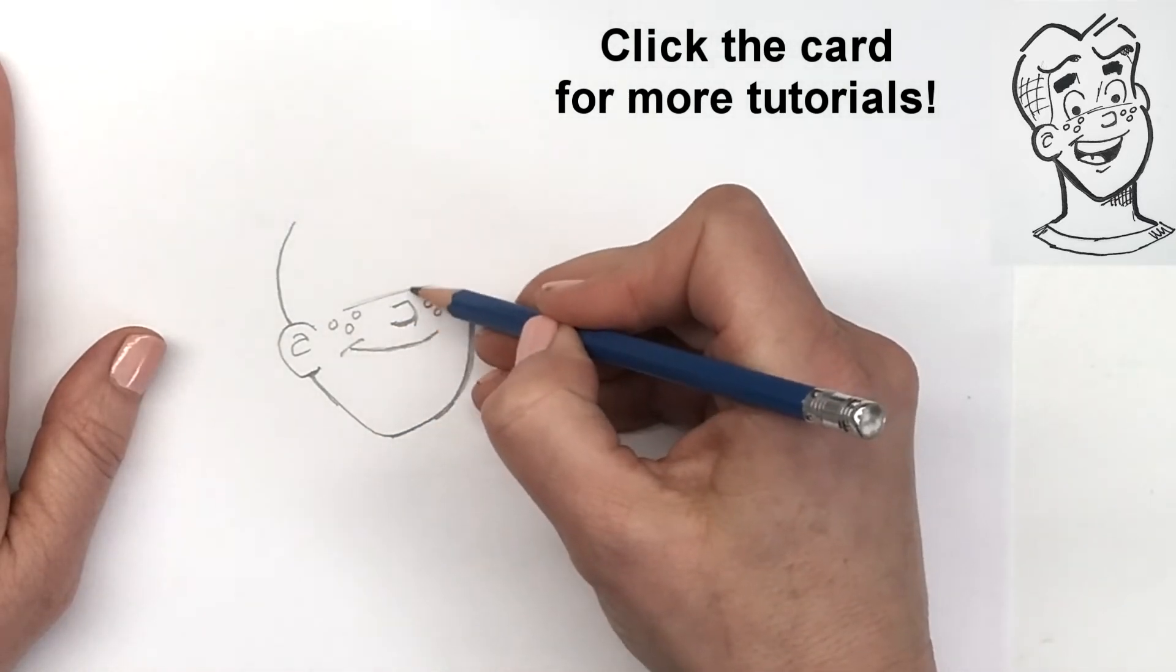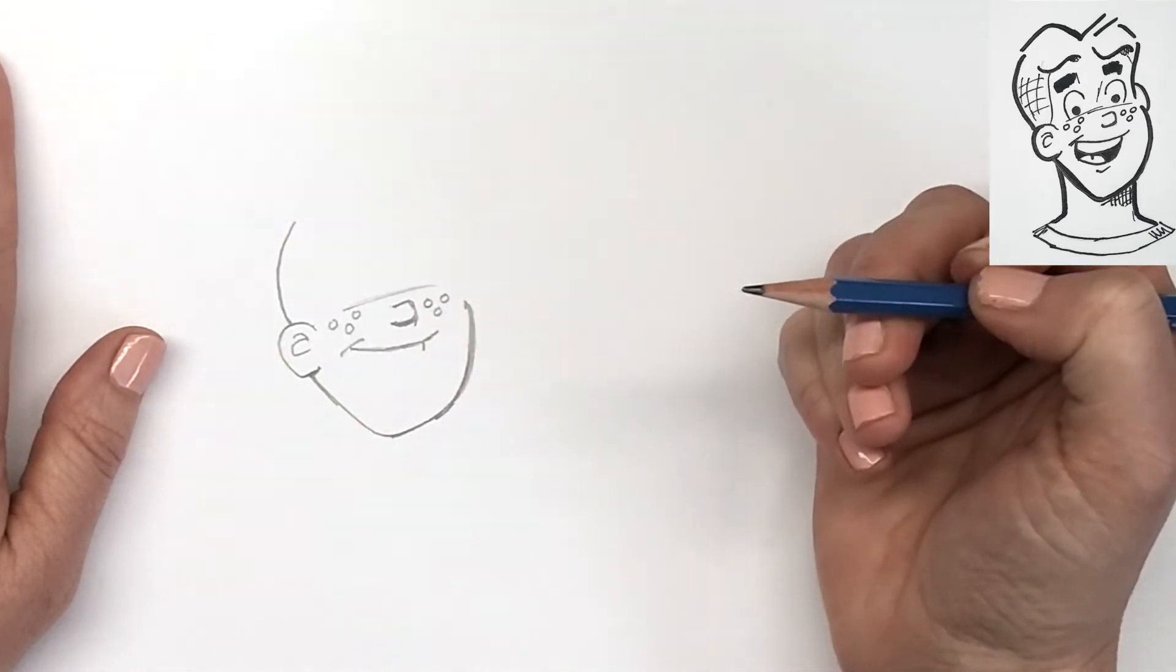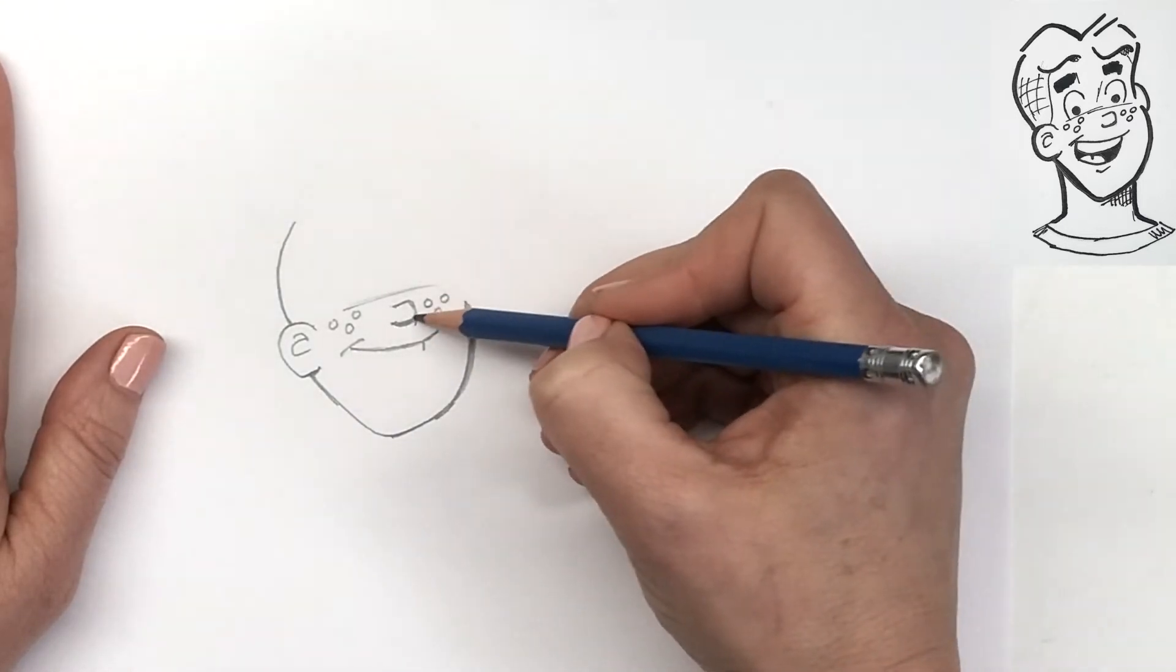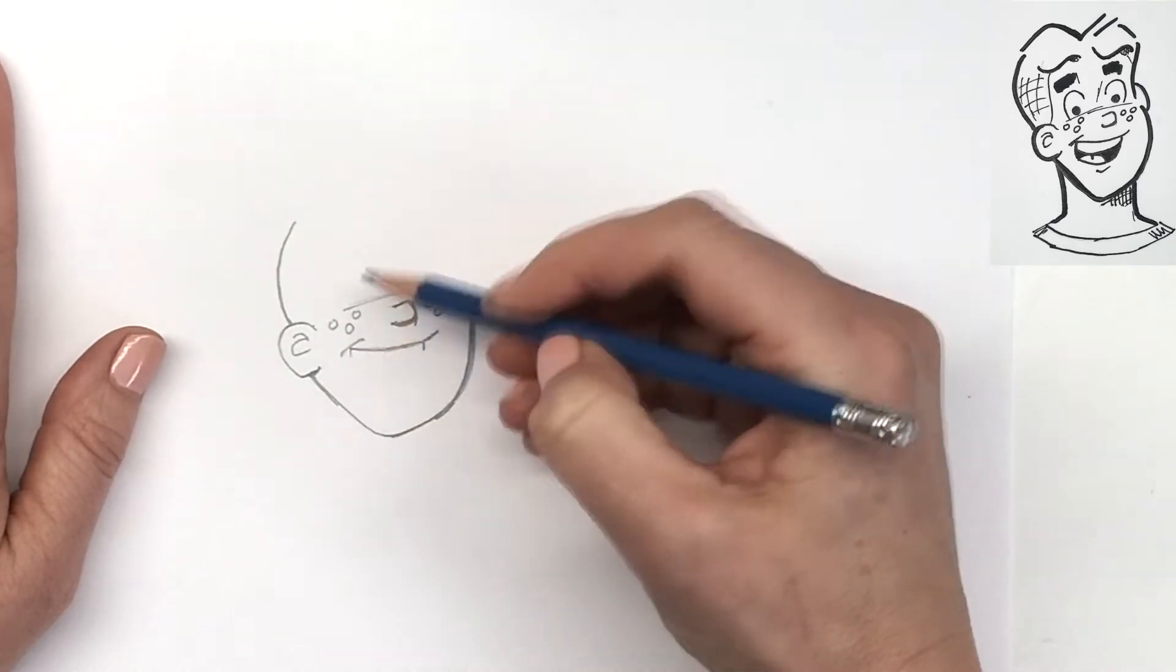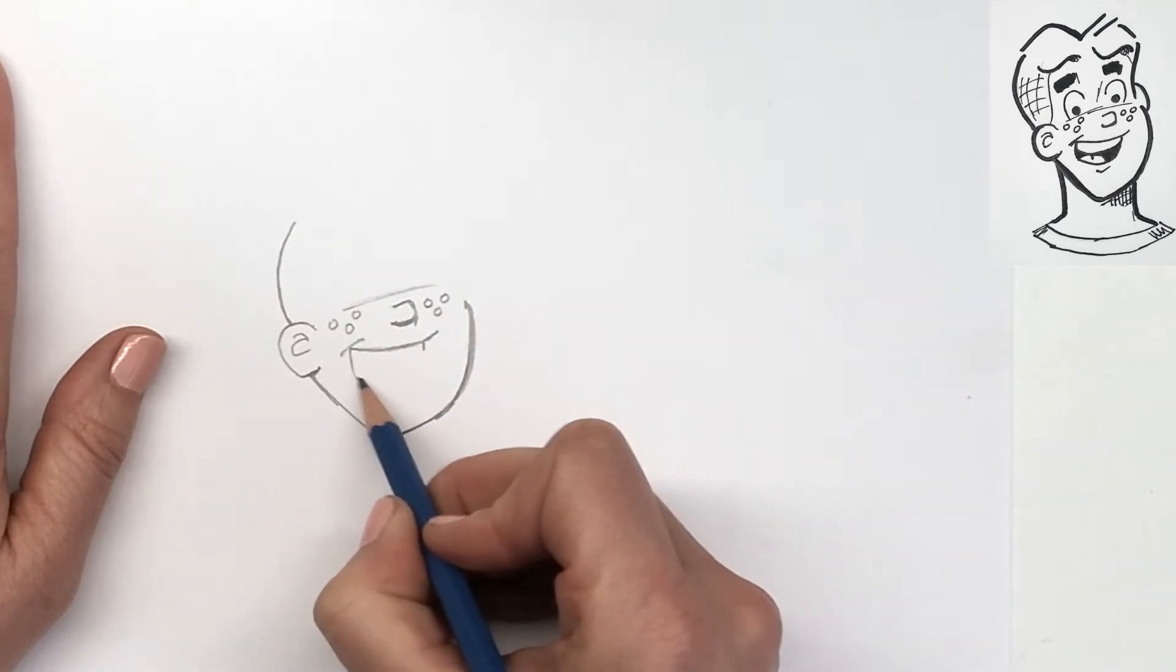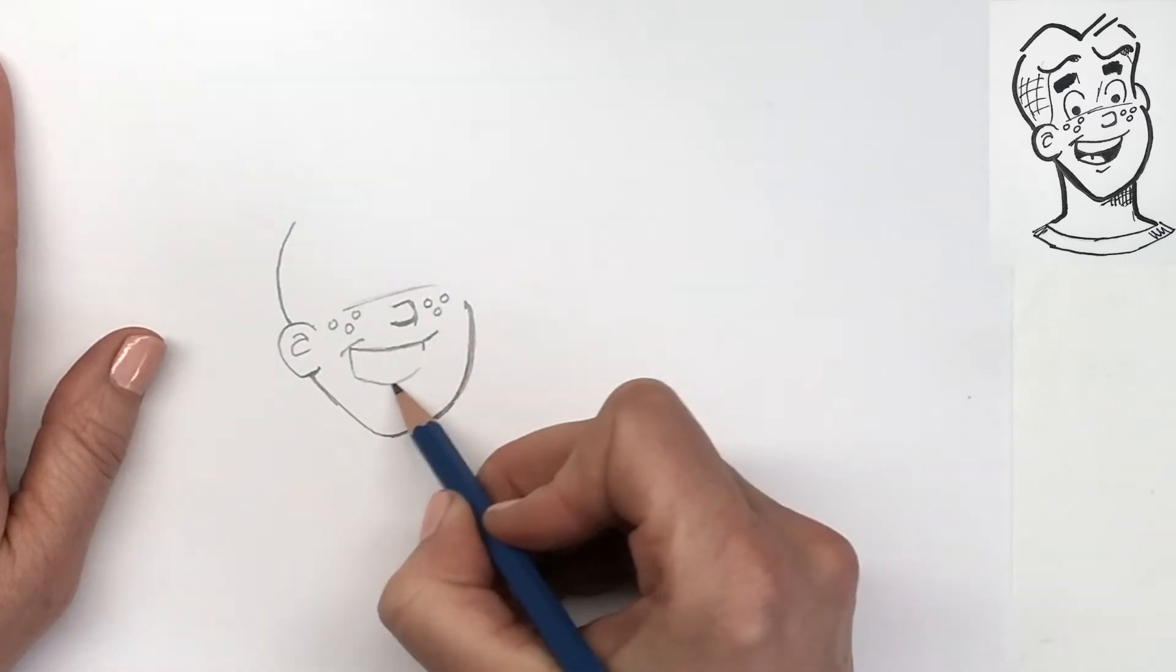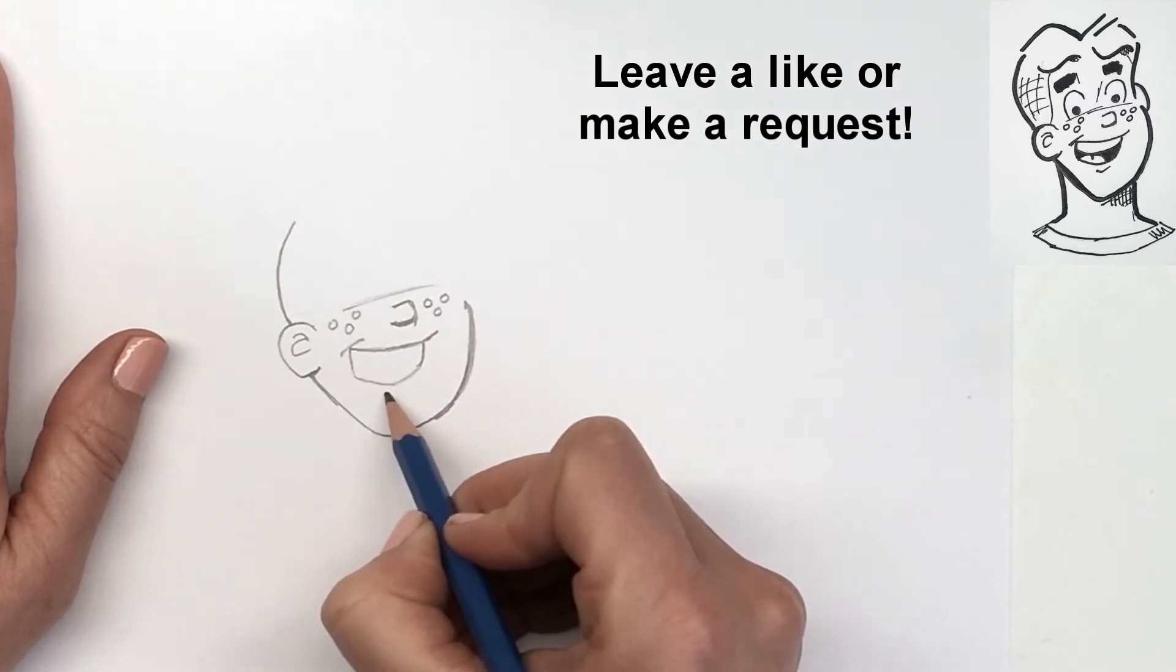And then his teeth are going to line up with the edge of his nose. So just come down from there, make a little line. And then we're going to draw the open mouth from the corner, we're going to go down and then you can see it's smiling so we're going to have it curving in the same sort of direction and closing on the other side.